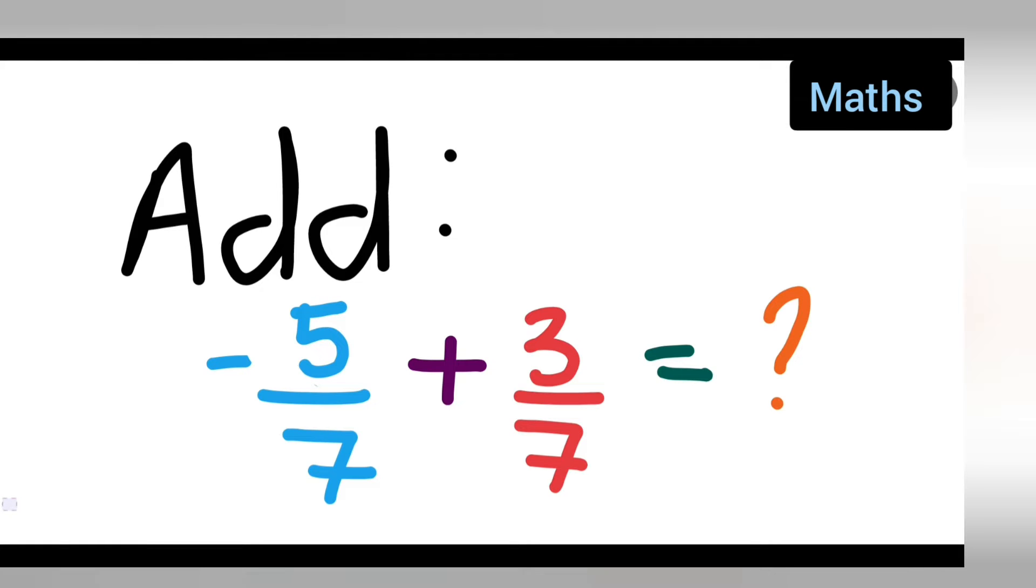Welcome to today's class of mathematics. Today's question is add negative 5 upon 7 plus 3 upon 7. Let us see how to add these two fractions.